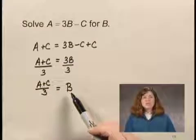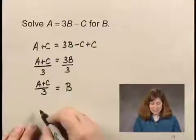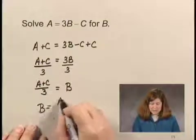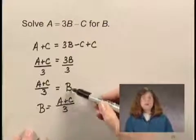Now even though B is on the right side of the equation, I have solved for B. This is the same equation as B equals A plus C over 3. You can write your answer either way.